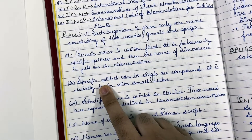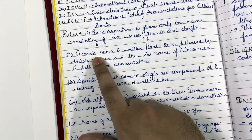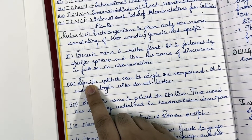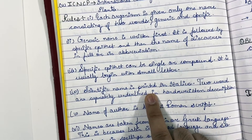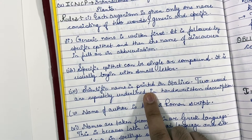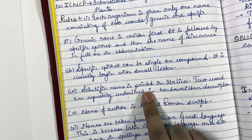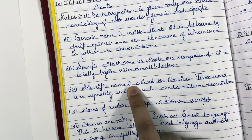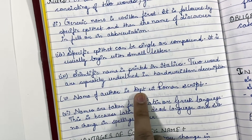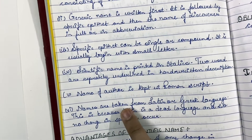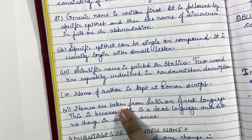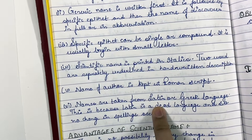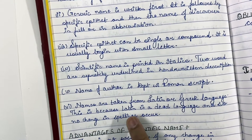The third rule is that the genus always begins with a capital letter, and the specific epithet is always written in small letters. Scientific names are printed in italics; if handwritten, the genus and specific epithet are separately underlined — not with a single line, but each underlined separately. The author's name is always written in Roman script. Scientific names are derived from Latin or Greek language because Latin and Greek are dead languages, so there is no chance of spelling mistakes.